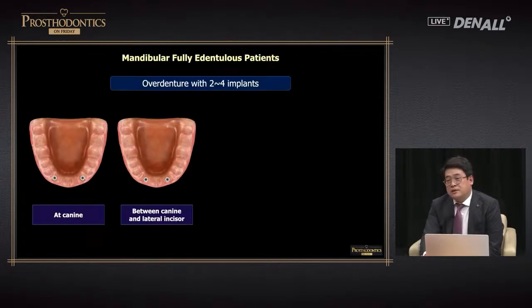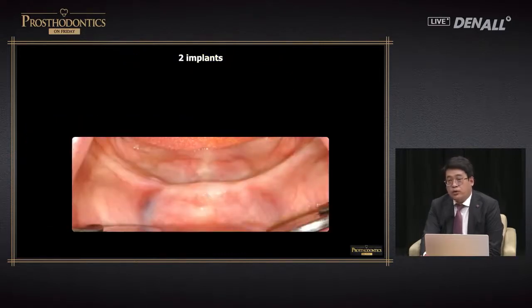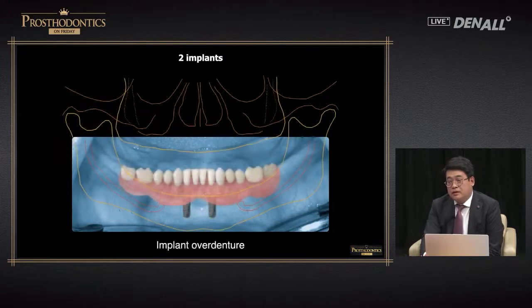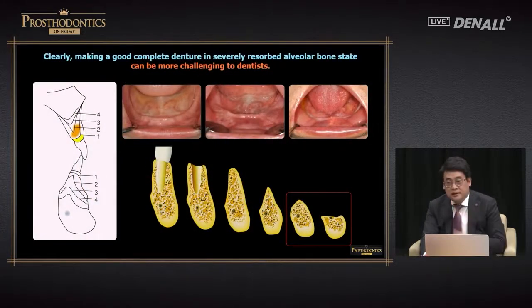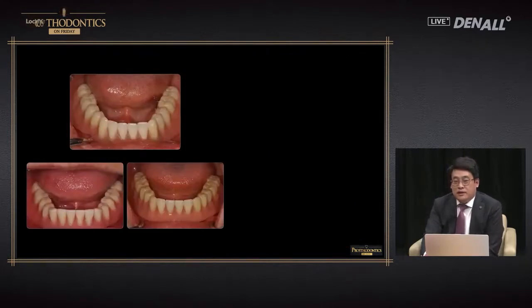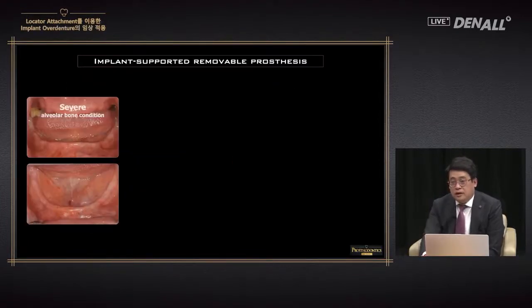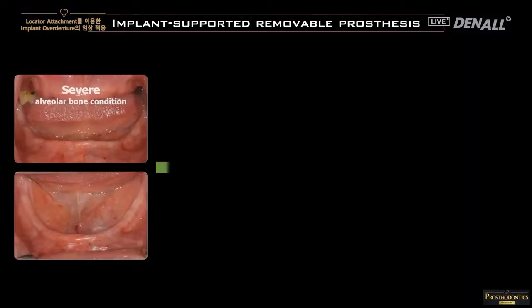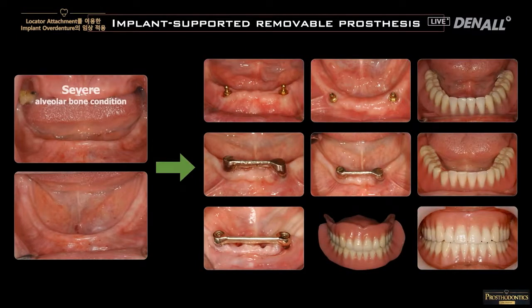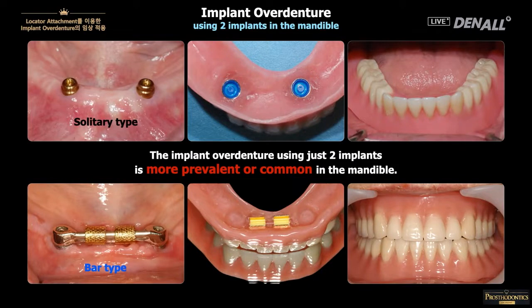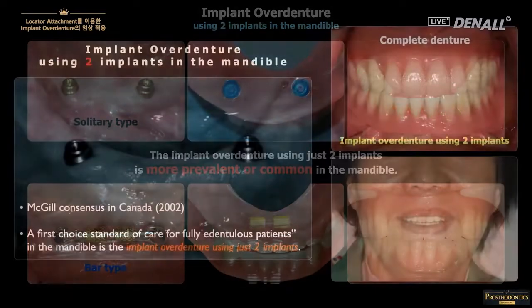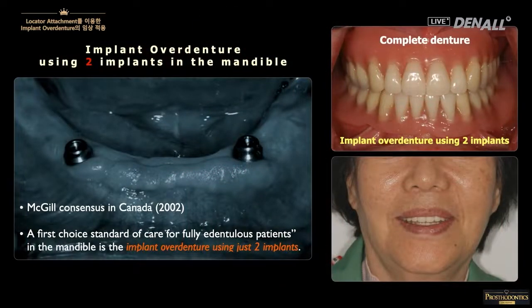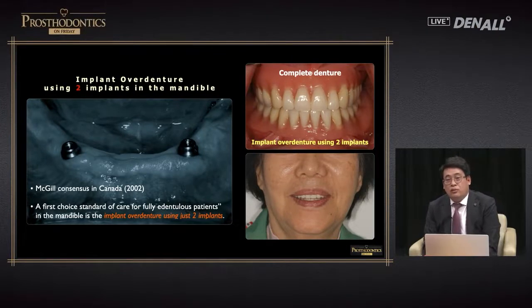In the case of the lower, we can provide implant overdenture using two implants. For older patients, implant overdenture using two implants is known to be very effective. Compared with the upper, there's a lot of alveolar bone loss in the lower, making peripheral sealing difficult for complete dentures. We can provide overdentures — either single standing type or bar overdenture where implants are connected. Overdenture is applied more to the lower compared with the upper.